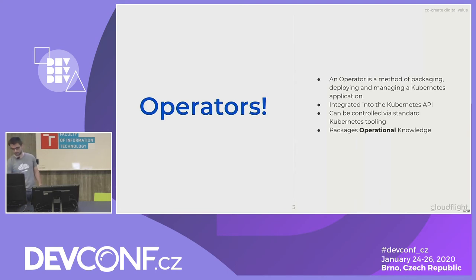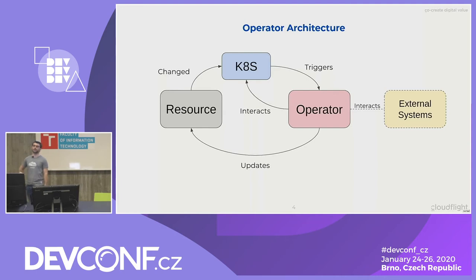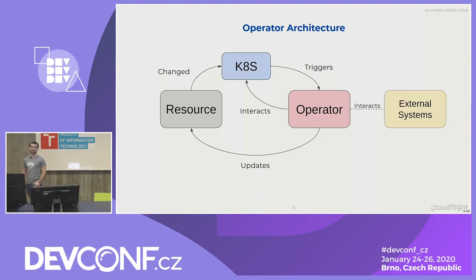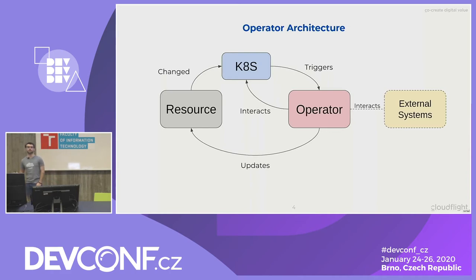I've prepared a short overview of how the operator architecture looks like. In the end, we have a resource — your standard Kubernetes resource, like a pod, like a deployment configuration, or OpenShift resources like an image stream or a build configuration — and you change those inside of Kubernetes. Nothing has to do with the operator yet; you just change the resource inside of Kubernetes. Now the operator comes in, gets triggered by Kubernetes, and performs some action — and at this point, this can be any action at all.